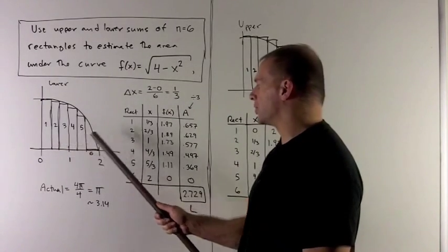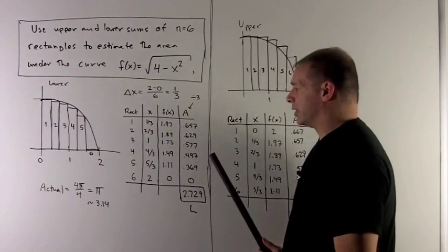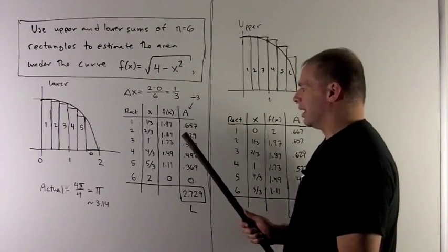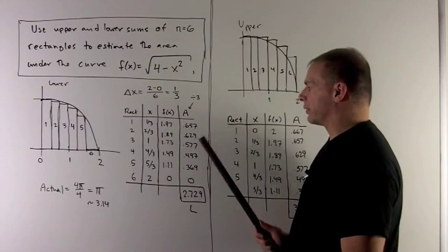Then I just continue across doing each rectangle in the same manner. We figure out the right end point, plug that into the function, and then we divide the answer there by 3.